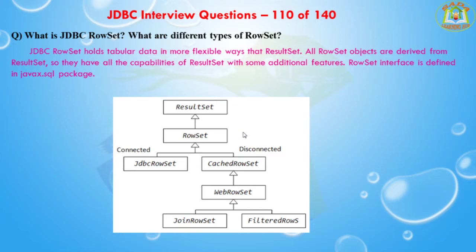We can manipulate and update the data while it is disconnected, then reconnect to the database and write the changes. The second disconnected RowSet is WebRowSet, derived from CachedRowSet — it can read and write XML documents. The third one is JoinRowSet, derived from WebRowSet — it can form SQL joins without having a connection to a data source. FilteredRowSet, also derived from WebRowSet, allows us to apply filtering criteria so that only selected data is visible.